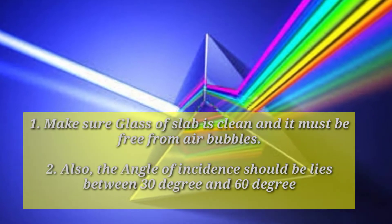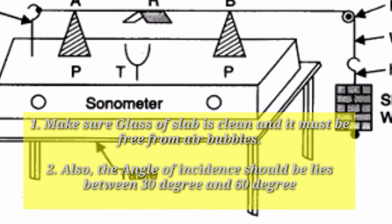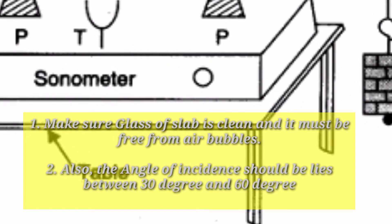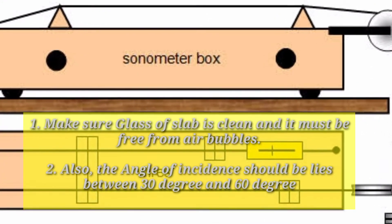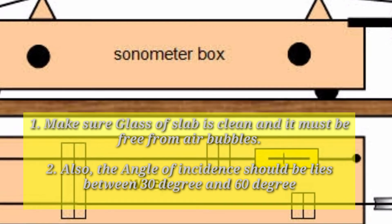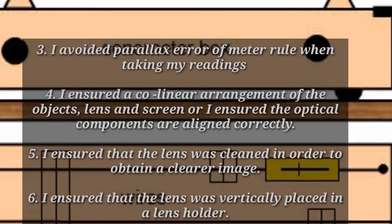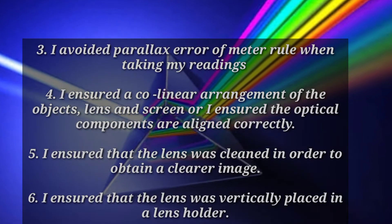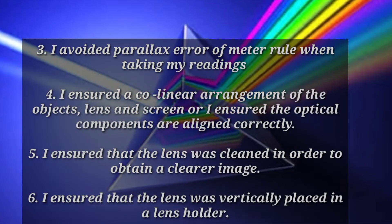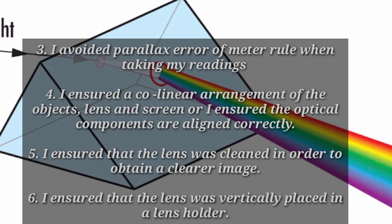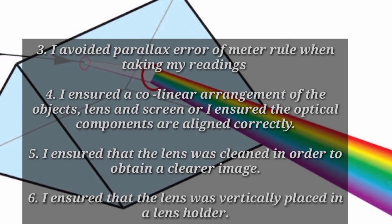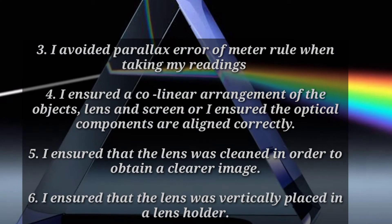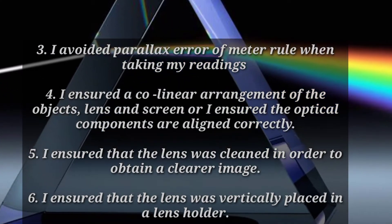1. Make sure the glass slab is clean and free from air bubbles. 2. The angle of incidence should lie between 30° and 60°. 3. I avoided parallax error of the meter rule when taking my readings. 4. I ensured a collinear arrangement of the objects, lens and screen, or ensured the optical components are aligned correctly.